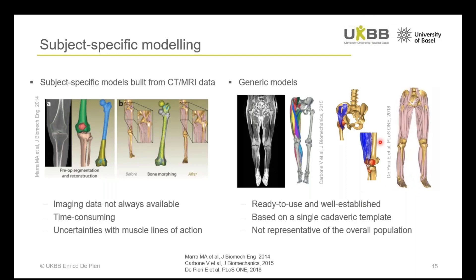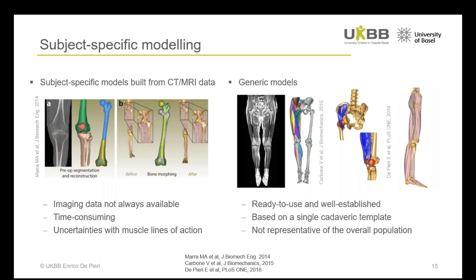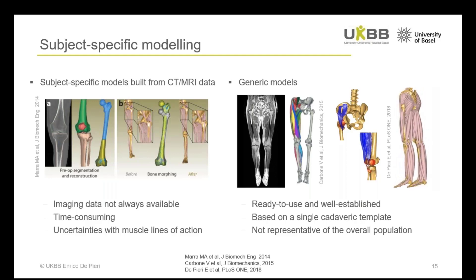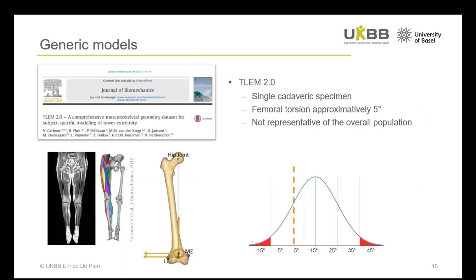On the other hand, generic models are ready-to-use and well-established, but their geometry is based on a single cadaveric specimen and cannot be considered representative of the overall population, let alone pathological cases. For instance, the TLEM 2.0 cadaveric dataset was obtained from a single cadaveric male specimen, and we found a torsion of approximately 5 degrees. This generic model is therefore not a good representation of pathological subjects, and probably not even representative of the variability observed in the healthy population.